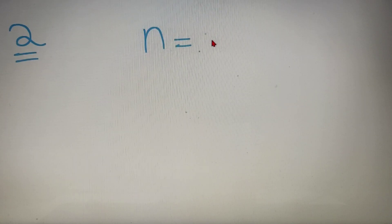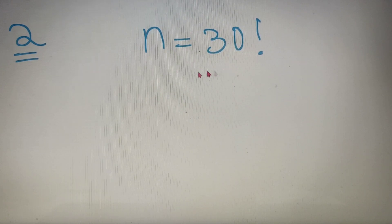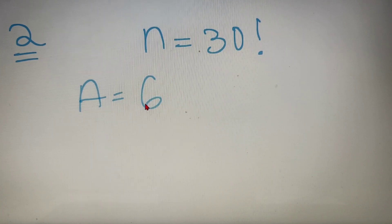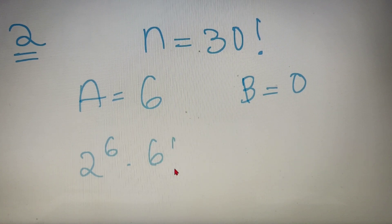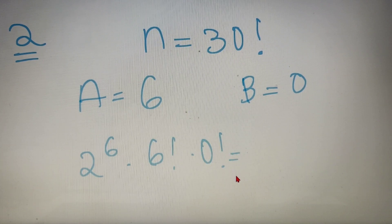For our second example, we take the value of n as 30, so we have to find the last non-zero digit of 30 factorial. Here, a is equal to 6 because 30 divided by 5 gives the quotient as 6, and the remainder is again 0, so b is equal to 0. According to the formula, we have 2 to the power 6, into 6 factorial, into 0 factorial. Now we just have to take the last non-zero digit of each of these three numbers.